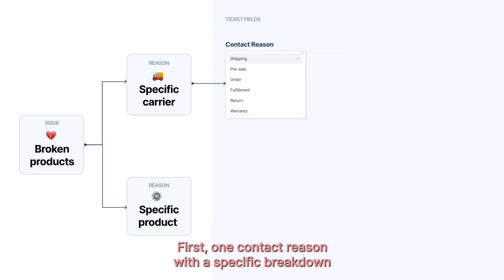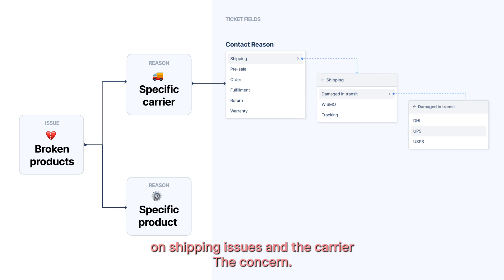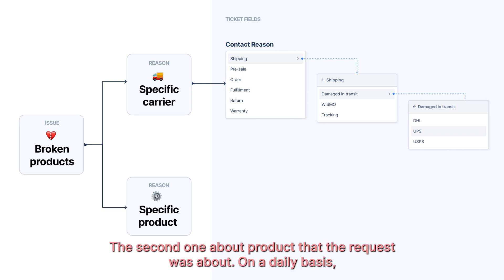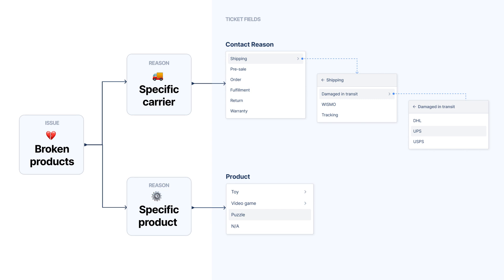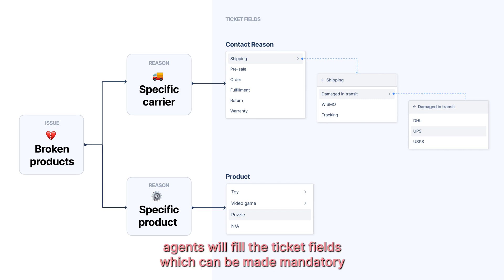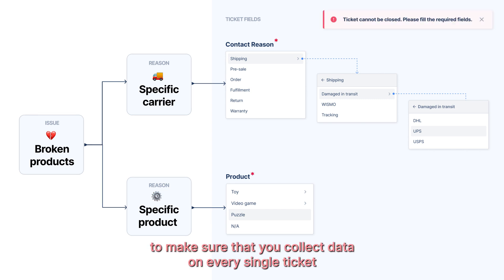The first one: contact reason, with a specific breakdown on shipping issues and the carrier that they concern. The second one: about the product that the request was about. On a daily basis, your agents will fill the ticket fields, which can be made mandatory to make sure that you collect data on every single ticket.